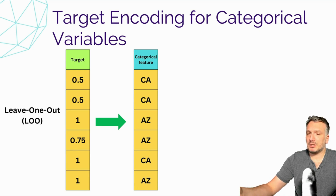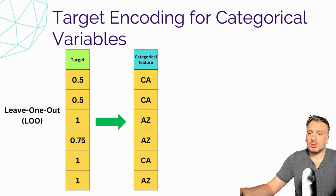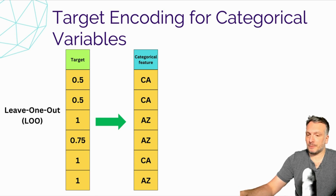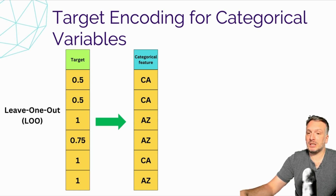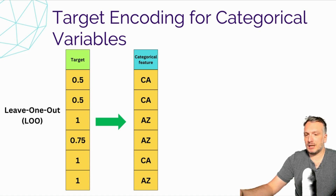When we use the model on new unseen data, we don't have access to the target, so we cannot correctly construct the categorical feature. Whatever encoding we built on the training data, we cannot build on the testing data. Using information that would not be available when predicting on unseen data is what we call data leakage.